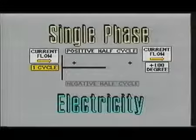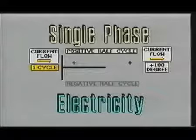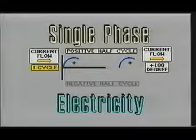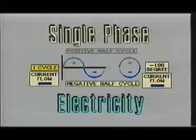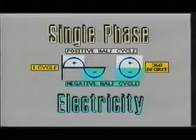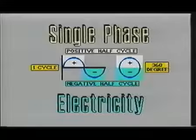We will begin our examination of three-phase electricity by first looking at one complete cycle of AC current. Notice that one cycle of electricity consists of 360 degrees which can be divided into two 180 degree divisions called alternations.